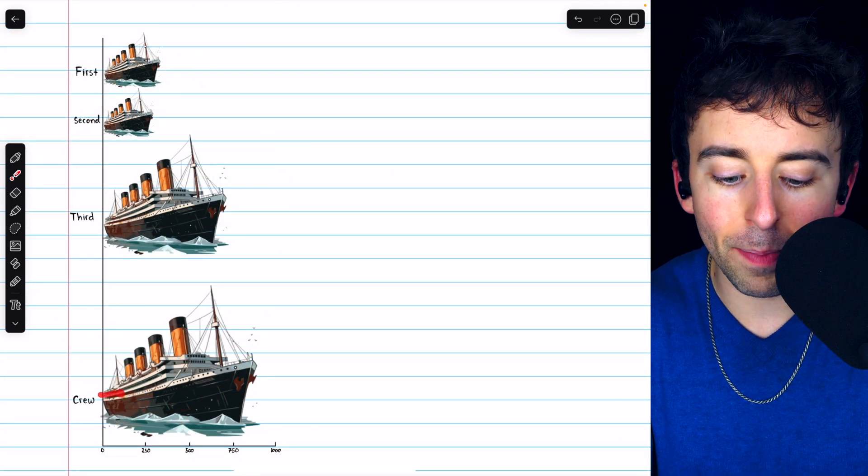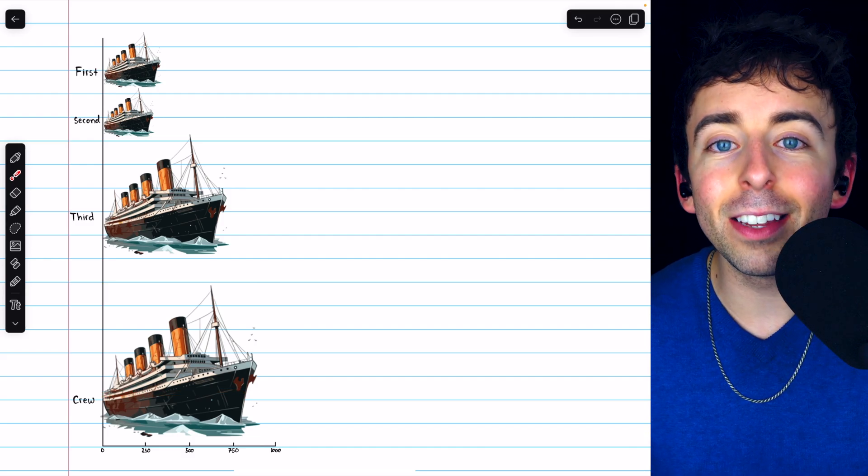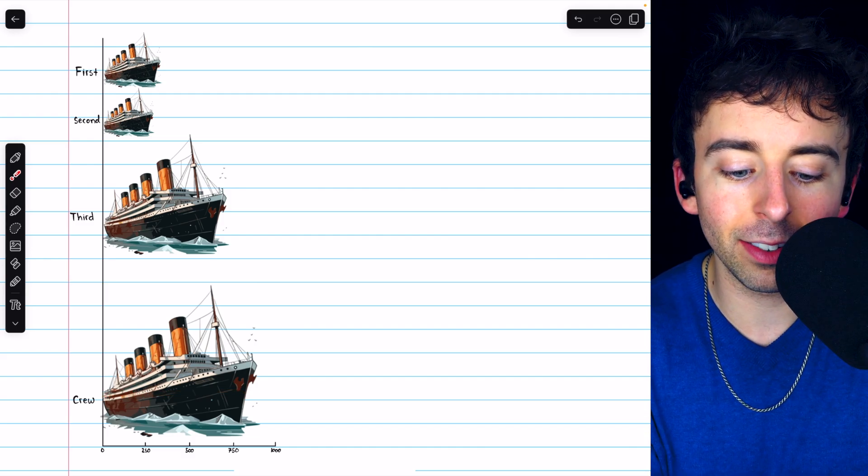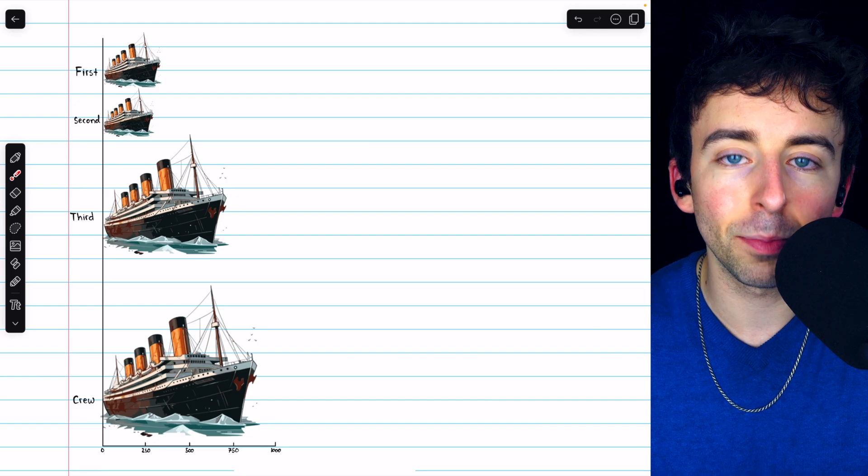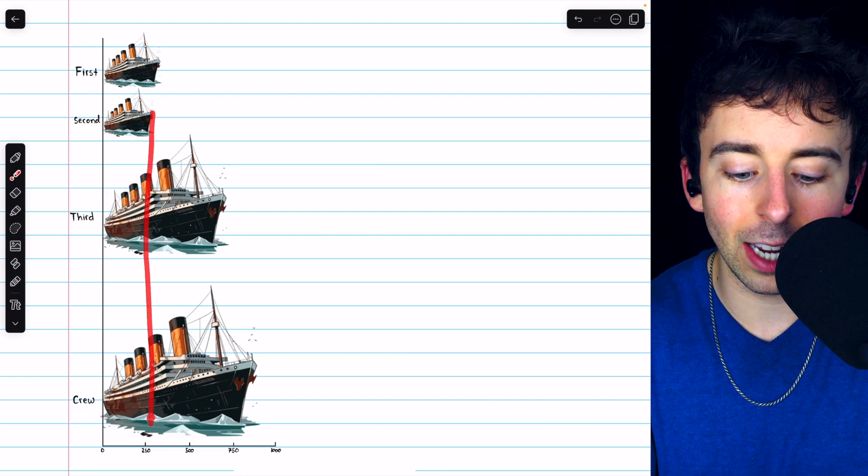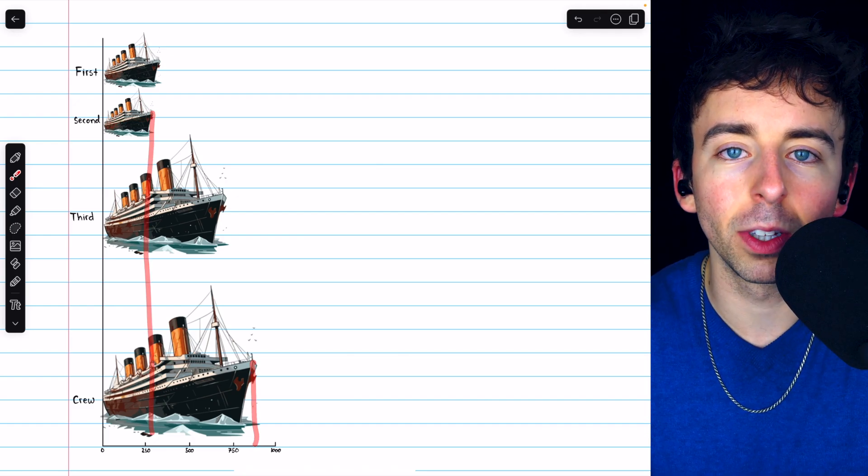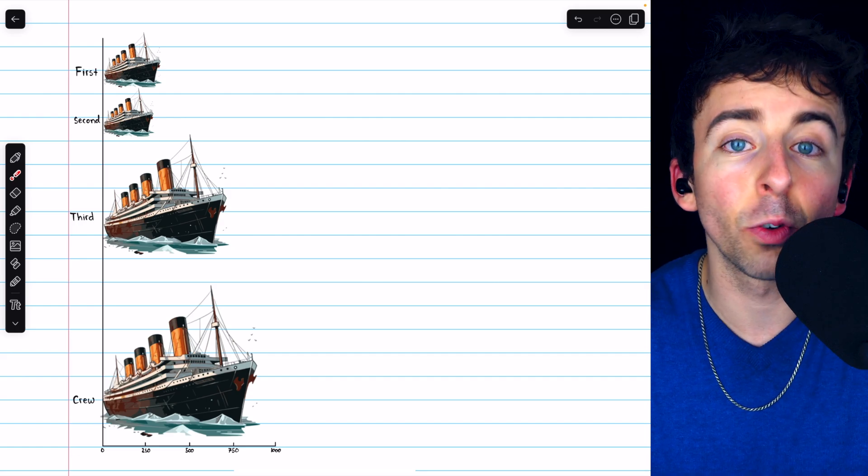Similarly, in this chart, the ship representing the crew members is three times as long as the ship representing second class passengers. You can see how the tips of the ships line up accurately with the counts, as they did in the original bar chart.